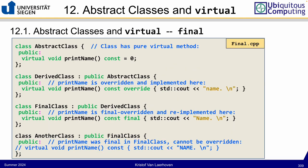For the 'final' keyword example: we have an abstract class, a derived class that overrides and implements the method, and then a 'final class' that overrides it once more but marks it as final. If another class then tries to override that method again, C++ will stop compiling because 'final' was declared — that is what appears in the error.